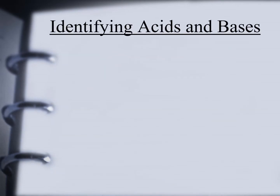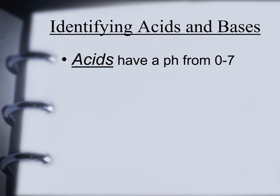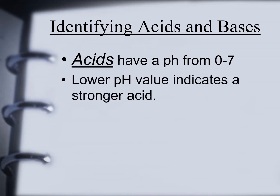Identifying acids and bases: acids have a pH from 0 to 6. Take note, the pH level of an acid is 0 to 6. A lower pH value indicates a stronger acid — meaning if a substance has a pH of 0, 1, 2, or 3, that substance has a stronger acid.